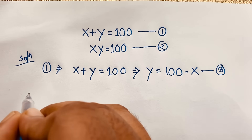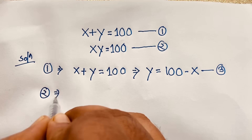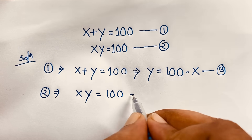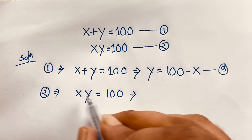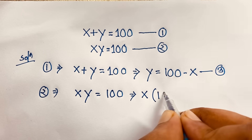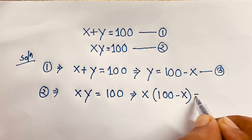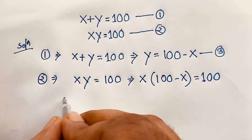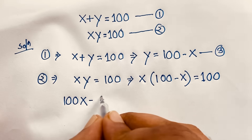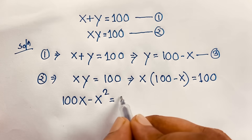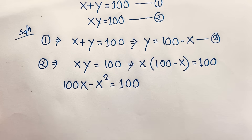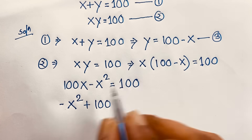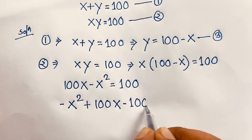Then, I take our second equation which is xy is equal to 100. Remember that y is equal to 100 minus x. So it will be x times (100 minus x) is equal to 100. Now, 100 times x will be 100x, then x times x will be x squared, equal to 100. So we get the quadratic: minus x squared plus 100x, and if I move 100 to this side, it will be negative 100, equal to 0.